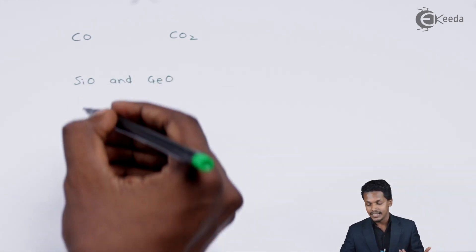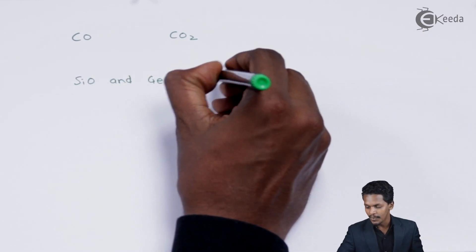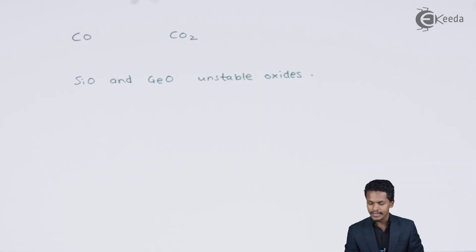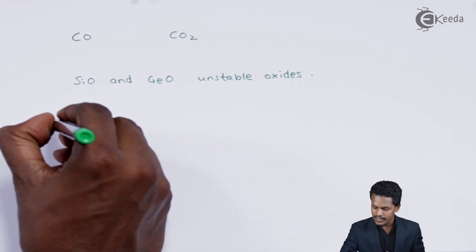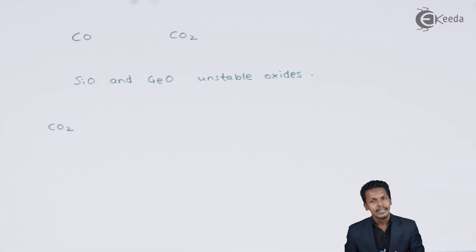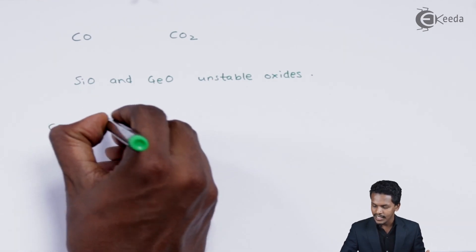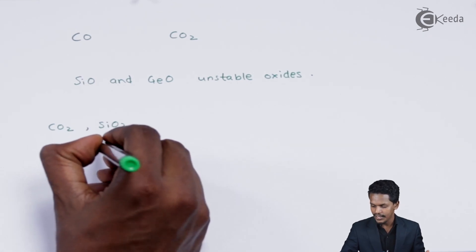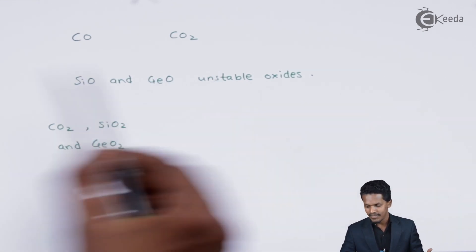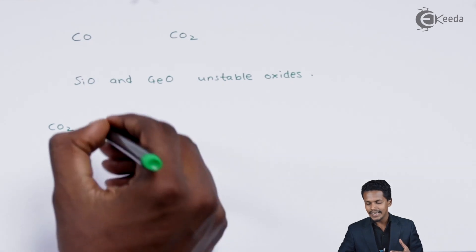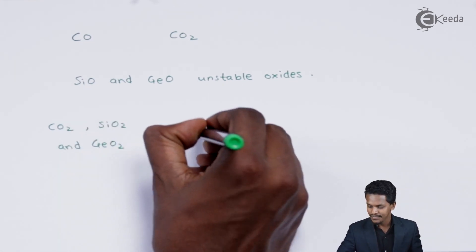SiO and GeO are basically unstable oxides. Comparing the dioxides in terms of whether they are acidic, basic, or neutral: CO2 is acidic in nature. CO2, SiO2, and GeO2 are acidic oxides — GeO is unstable while GeO2 is stable. Whenever these dioxides undergo hydrolysis, an acidic solution is formed, which is why they are known as acidic oxides.